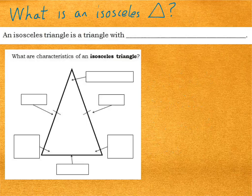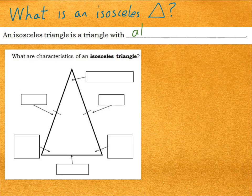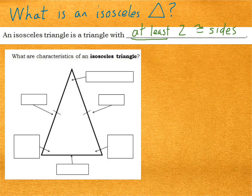So what is an isosceles triangle anyway? An isosceles triangle is a triangle with at least two congruent sides. Note that I said at least two — that means it could have three congruent sides as well. So an equilateral triangle that has three congruent sides also counts as isosceles. That will be important for later.